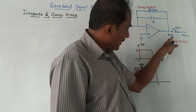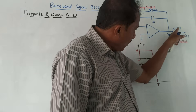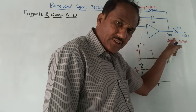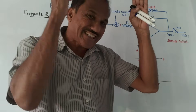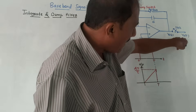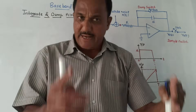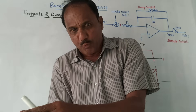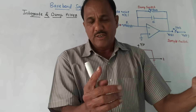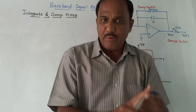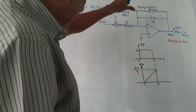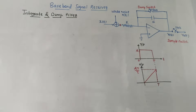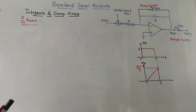The integrator output is denoted by v0(t). If you close switch SW2, which is the sample switch, you are taking samples of this output. The sampled output is denoted by v0(t). After comparing this sampled output with some standard values, the decision is taken whether the received bit is zero or one. This is the working of the integrate and dump filter.